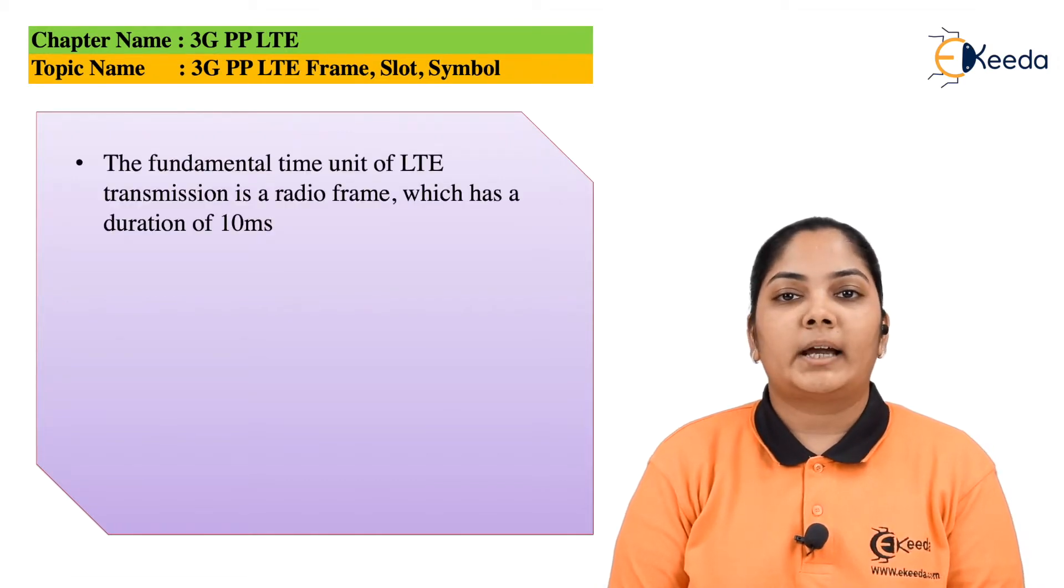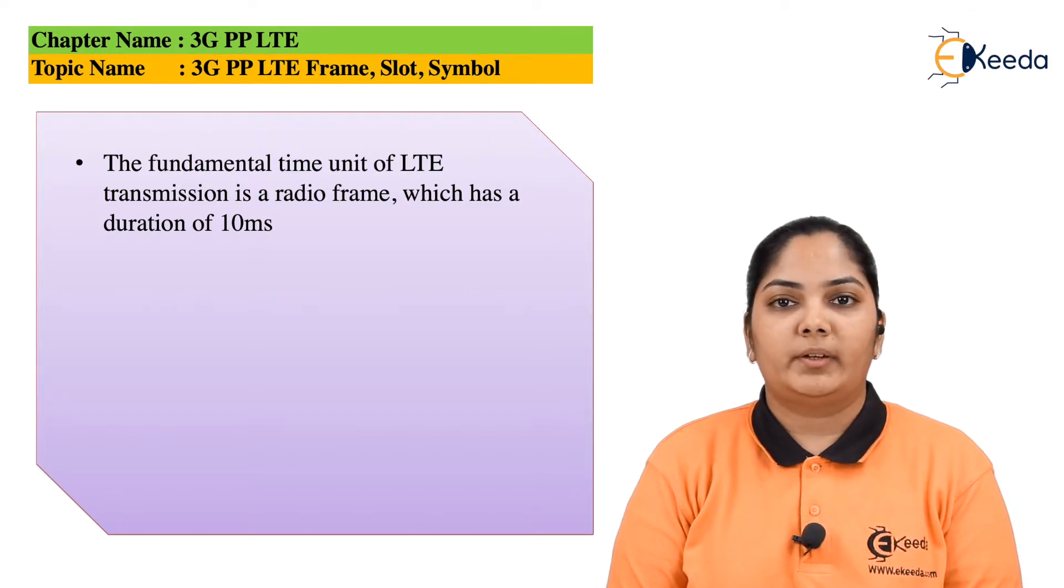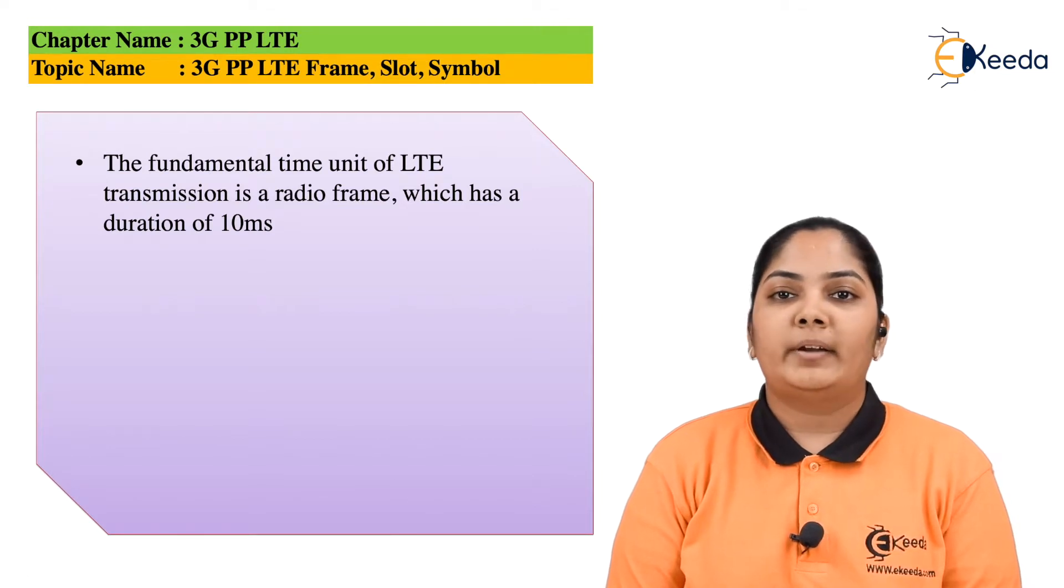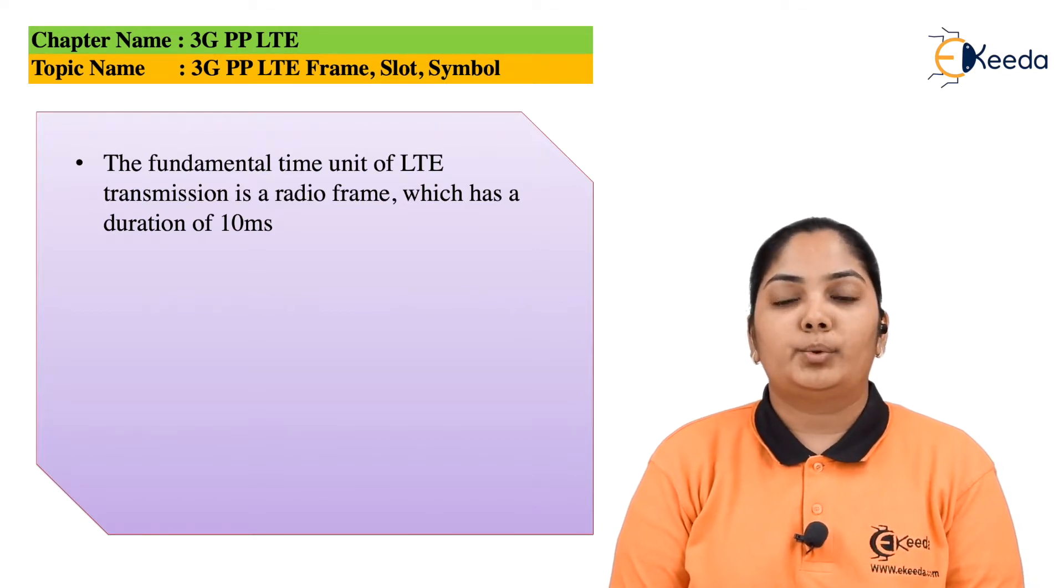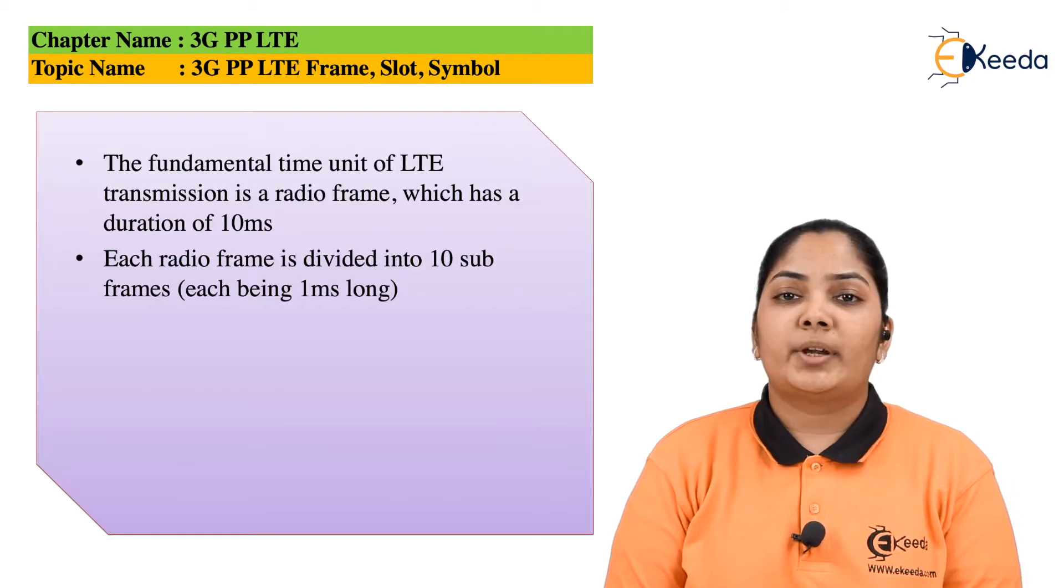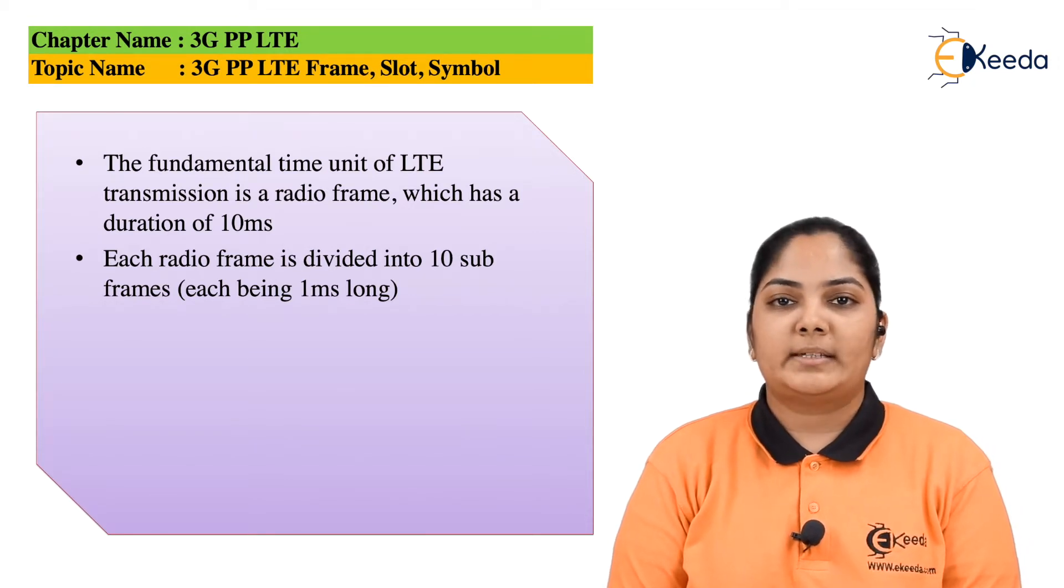The fundamental time unit of the LTE transmission is a radio frame, and the duration of this frame is 10 milliseconds. Remember, here there are time slots being given for the user to transmit the data. As we can see here, one radio frame which is equal to TS equals 10 milliseconds. Each radio frame is then divided into 10 subframes, each being 1 millisecond long.